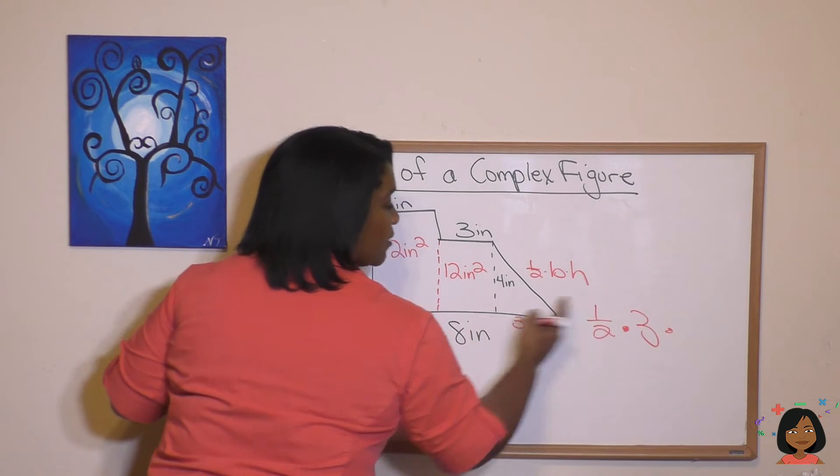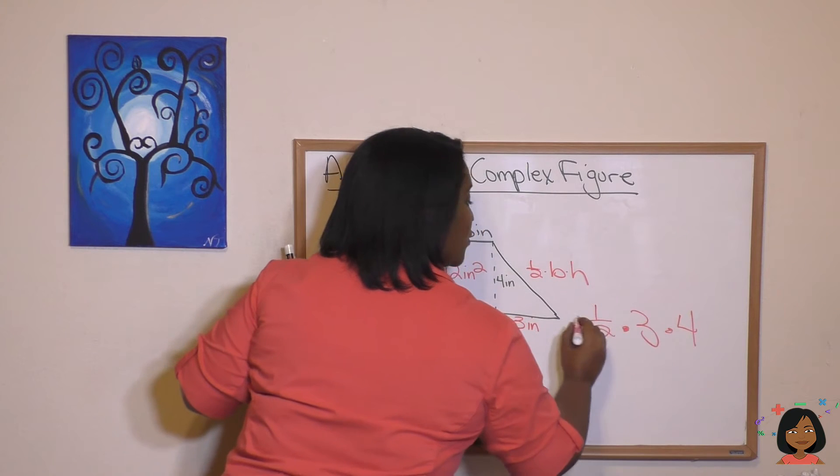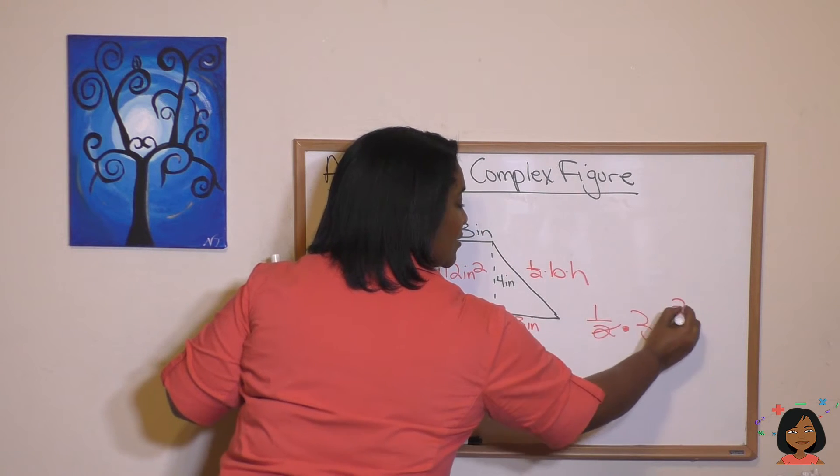And what's our height? Our height happens to be drawn in right there. It's four inches. So one half base times height, I can do some canceling.